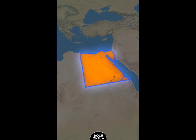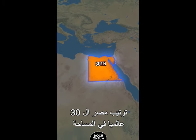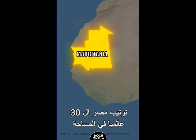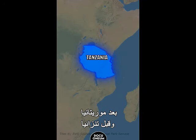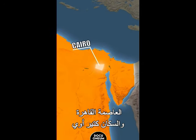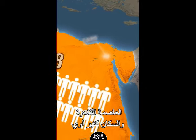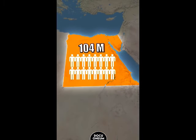With a total land area of approximately 1 million 10,000 square kilometers, Egypt ranks as the 30th country by land area, behind Mauritania and above Tanzania. With Cairo as the capital, Egypt is home to over 104 million people.